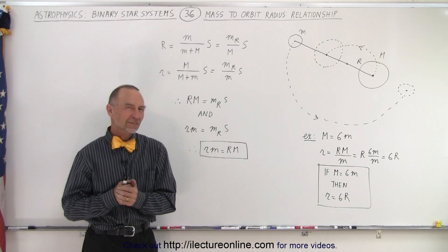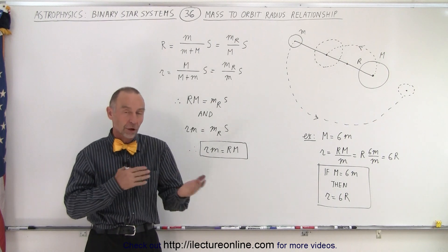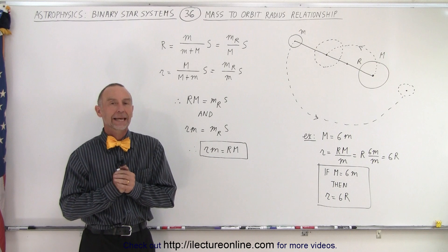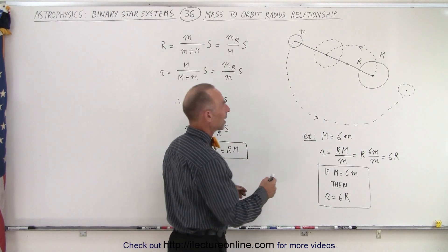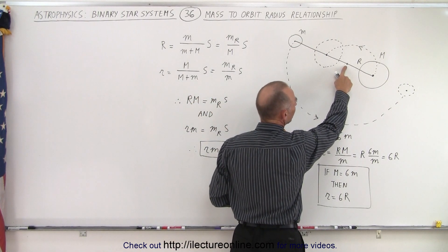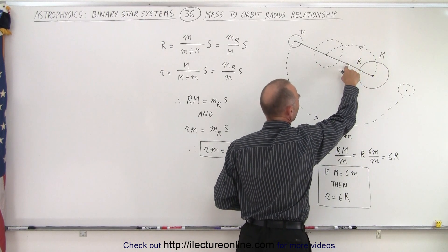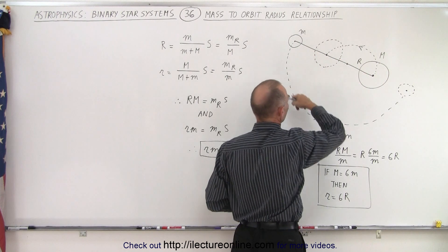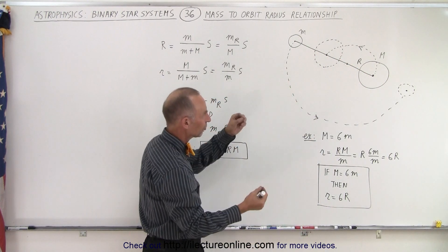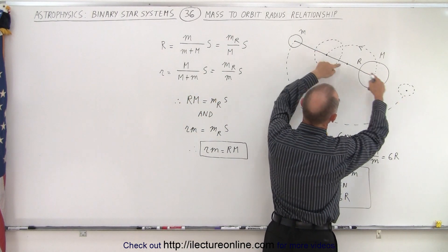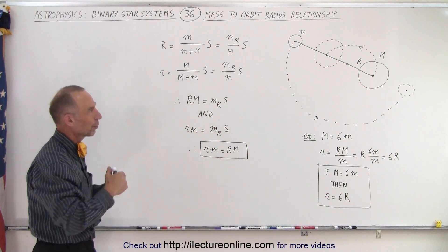Welcome to our lecture online. Let's get a good conceptual feel for the relationship between the orbital radius of the large and small objects in a binary system and their relative masses. Here we have a nice picture. Notice that we have the center of orbit — the barycenter — for the two objects. The large object revolves around the barycenter and the small object revolves around the barycenter in the opposite direction, so they are always opposite to one another and stay in sync as they move around.